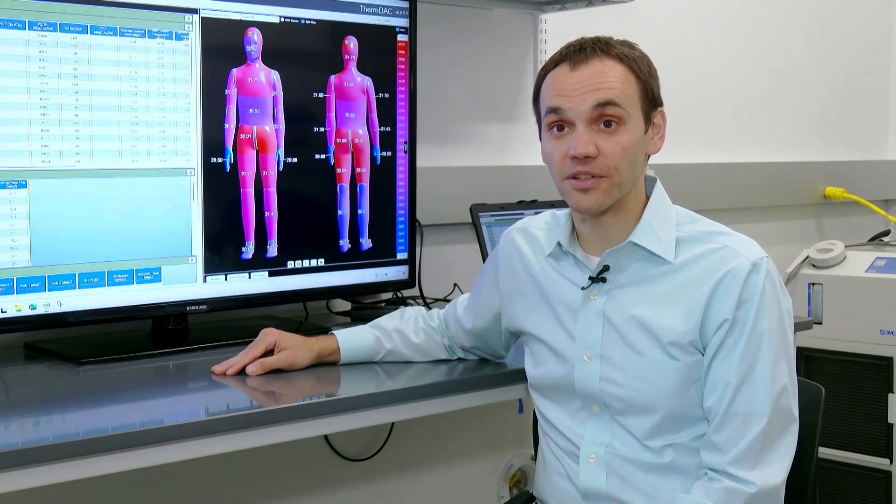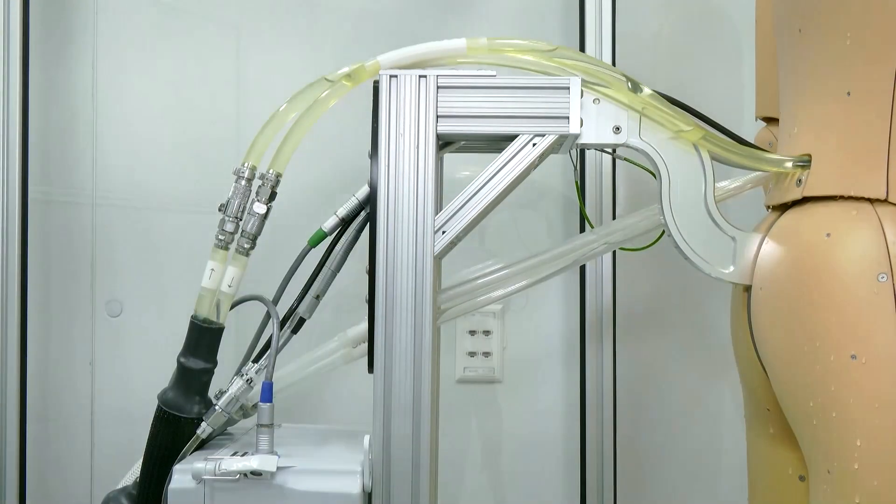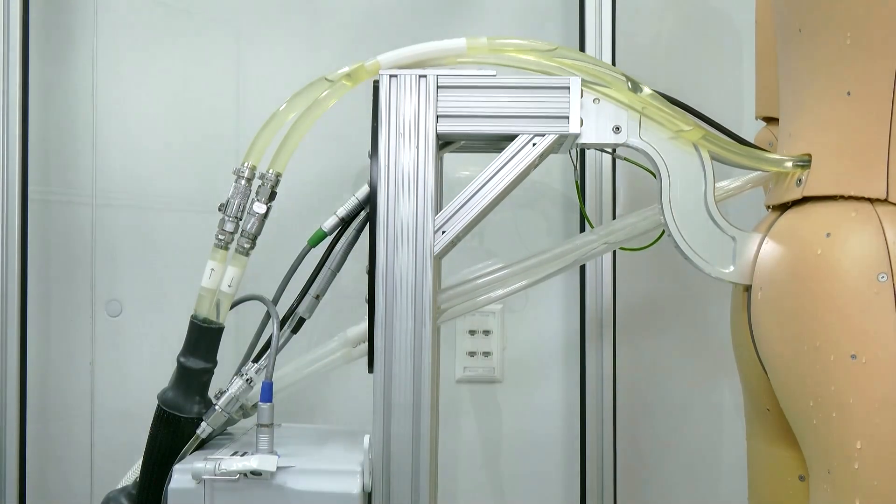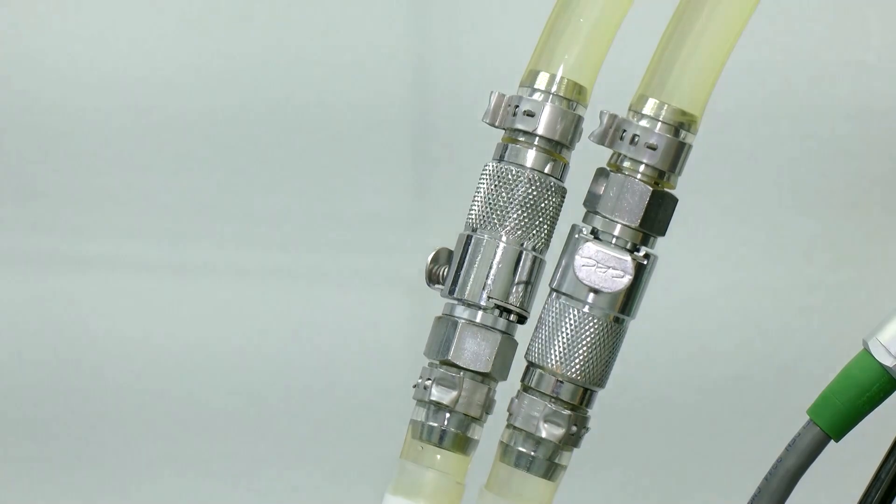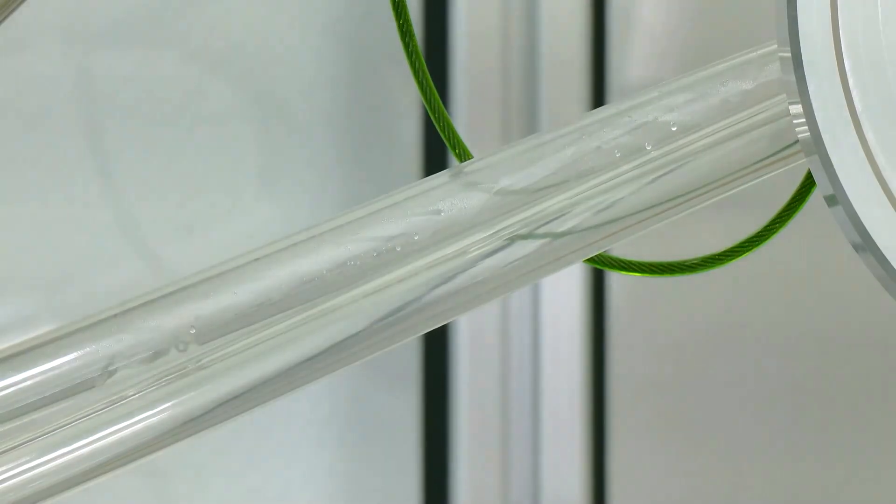With the thermal mannequin, we can actually simulate the conditions and see how fast that core temperature is increasing. Andy has 35 different surface areas. Each one is individually controlled with temperature sensors, heat flux sensors, and pores to sweat.